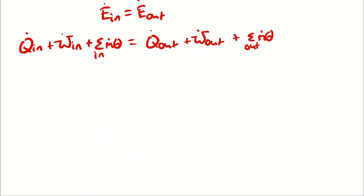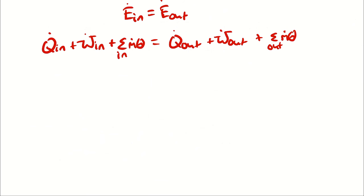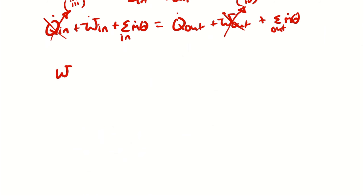I can now neglect the terms assumed to be negligibly small. Since I have a rate of heat rejection, I'm neglecting Q-in. Since I have a power input, I'm neglecting a power output. So I have power input plus the mass flow rate times the specific energy of the moving mass at state 1, which equals Q-dot-out plus the mass flow rate times the specific energy of the flowing mass at state 2.